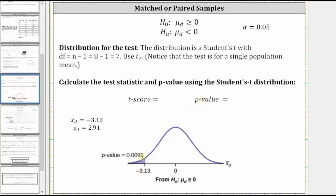So the p-value is equal to the area shaded under the curve to the left of negative 3.13, which means the p-value is also equal to the probability the sample mean of the differences is less than or equal to negative 3.13.